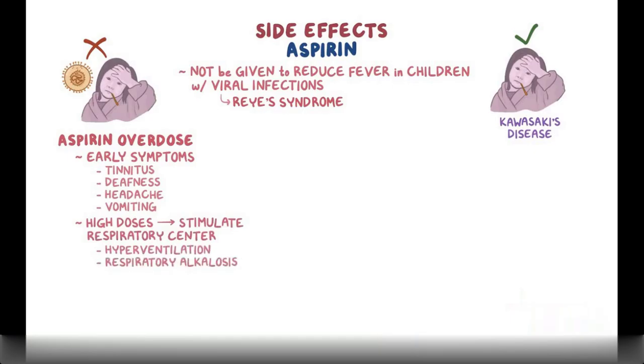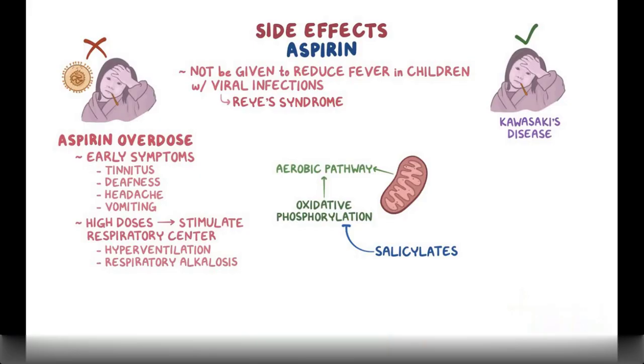Moreover, as the dose increases, salicylates start to inhibit oxidative phosphorylation, which is used to generate energy in the aerobic pathway. So, the body switches to the anaerobic pathway, which produces lactic acid, and the increase in lactic acid eventually causes an elevated anion gap metabolic acidosis.